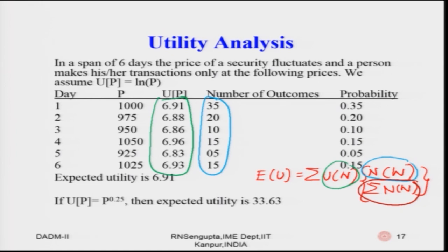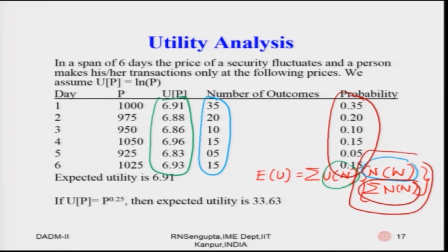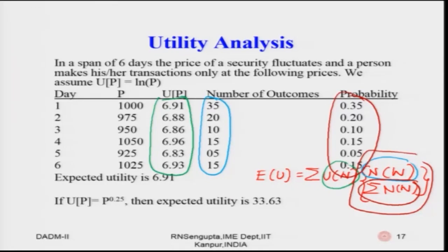We can find the probabilities and do the calculations accordingly. If the utility function is given as p to the power one-fourth (p^0.25), then the expected utility comes out to be 33.63 in value terms. You can make a decision by finding utilities, multiplying by probabilities, finding the expected value, and ranking accordingly.